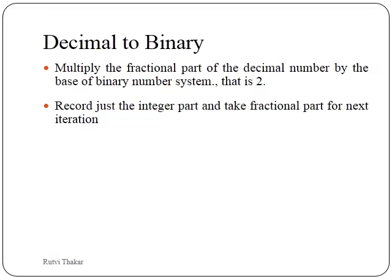Let us see the first one: how to convert the fractional part of decimal to binary. The steps are we have to multiply the fractional part of the decimal number by the base of the binary number system, that is 2. We have to record the integer part and again multiply the fractional part by 2 for the next iteration, continuing till we get the answer 0 or till the specified number of digits.